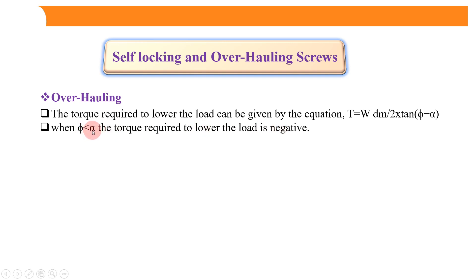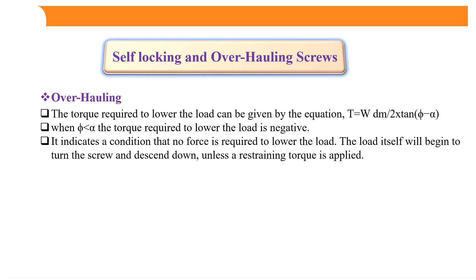This is exactly opposite to self-locking. In overhauling, when the friction angle is less than the helix angle, the torque required is negative, which indicates that no extra force is required to lower the load. The load itself will begin to turn the screw and descend downward unless a restraining torque is applied. This means it is not a locking condition — it is the overhauling condition.